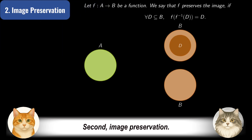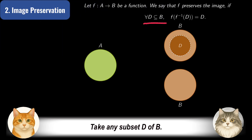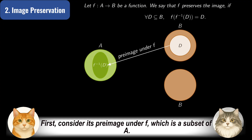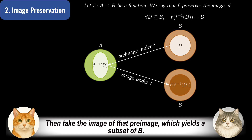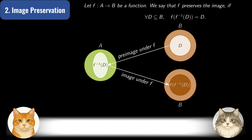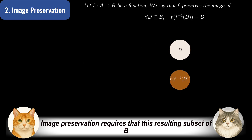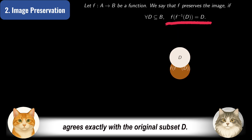Second, image preservation. Take any subset D of B. Consider its preimage under f, which is a subset of A. Then take the image of that preimage, which yields a subset of B. Image preservation requires that this resulting subset of B agrees exactly with the original subset D.